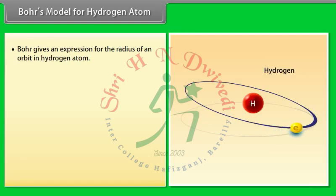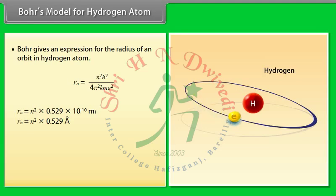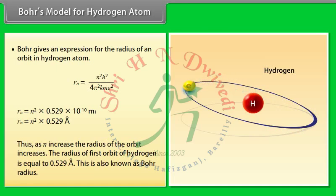Bohr gives an expression for the radius of an orbit in the hydrogen atom: Rn = n²h²/(4π²kme²). Rn = n² × 0.529 × 10⁻¹⁰ meter, or Rn = n² × 0.529 angstrom. Thus, as n increases, the radius of the orbit increases. The radius of the first orbit of hydrogen is 0.529 angstrom, also known as the Bohr radius.